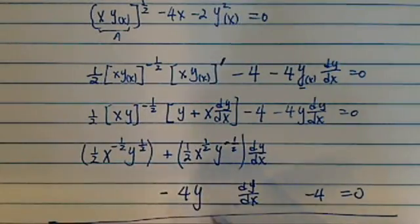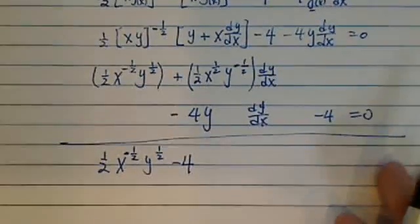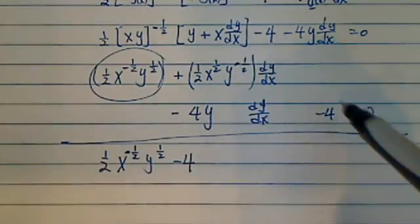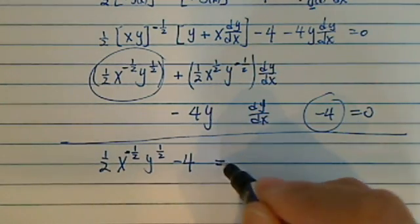So let's combine this whole thing here and move this one onto the other side. So I have a half, x to the half minus half here, y to the half, minus 4. That's all the terms that does not have any. So this term doesn't have dy/dx. This term doesn't either. And that's equal to,